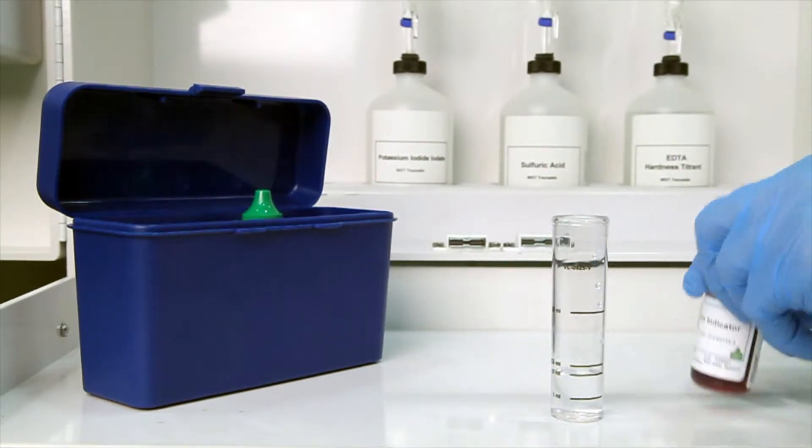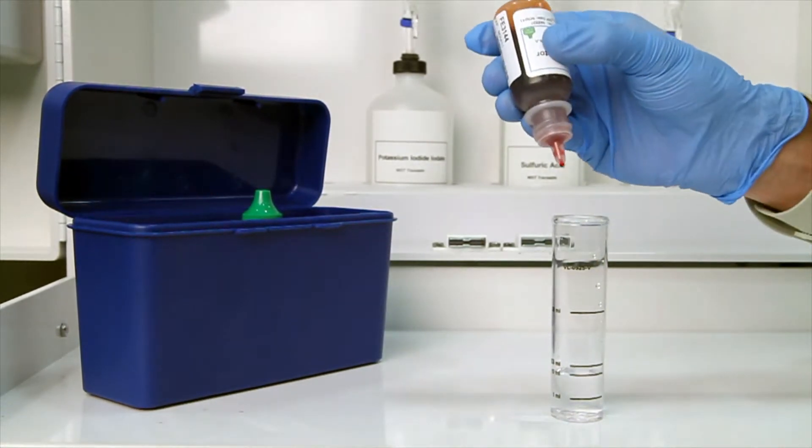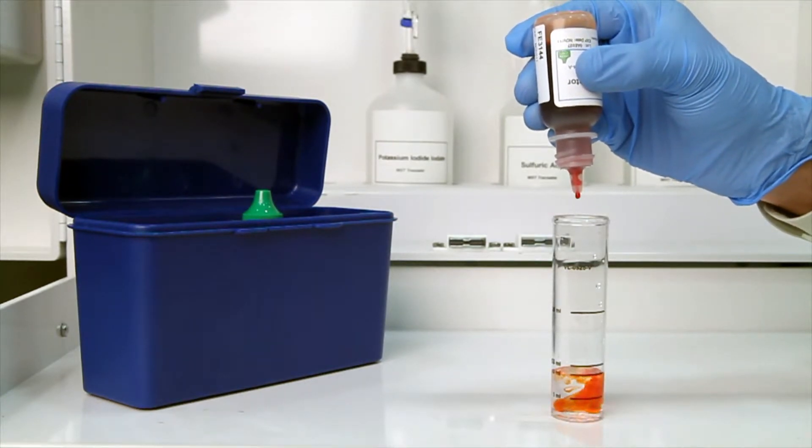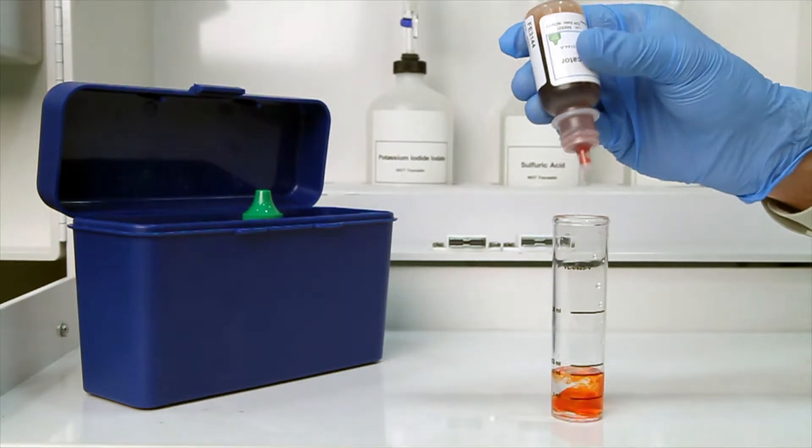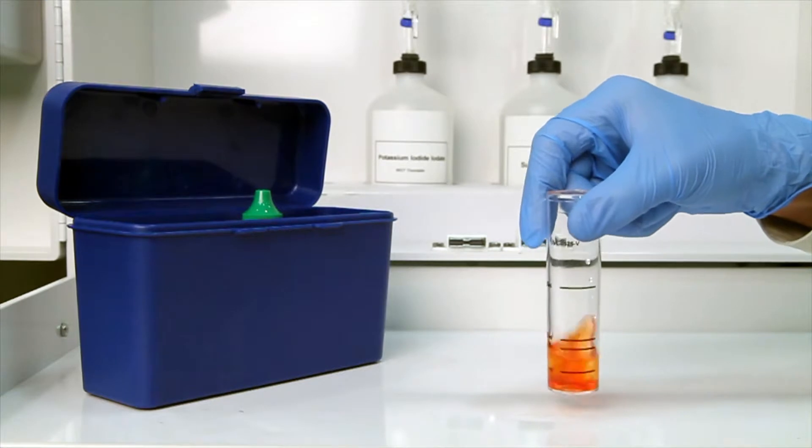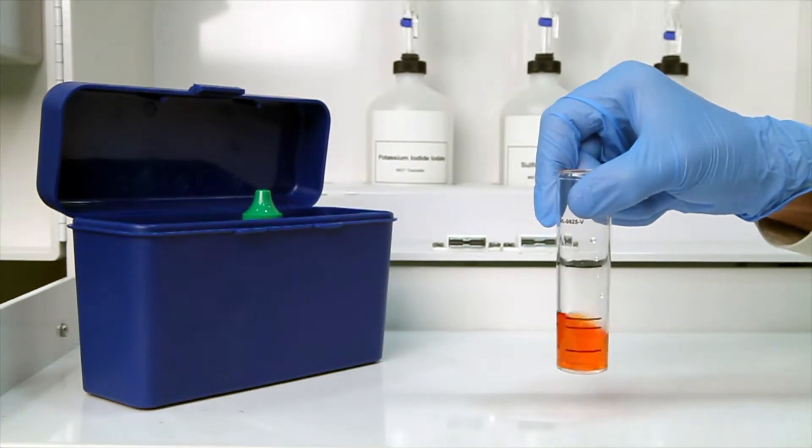The bottle contains a dropper tip, so it's important to hold the bottle vertically to get a consistent drop size. After the addition of each reagent, swirl the vial to make sure the reagents are properly mixed. The sample should turn orange.